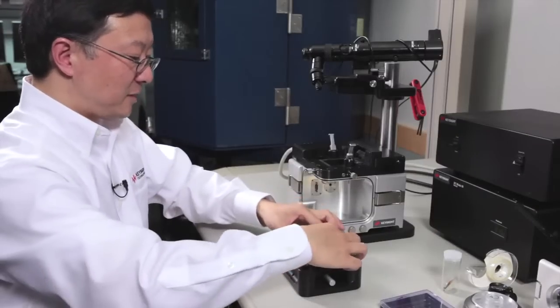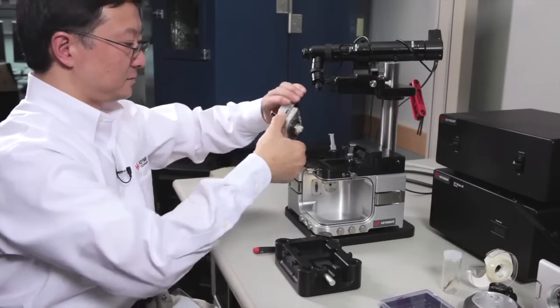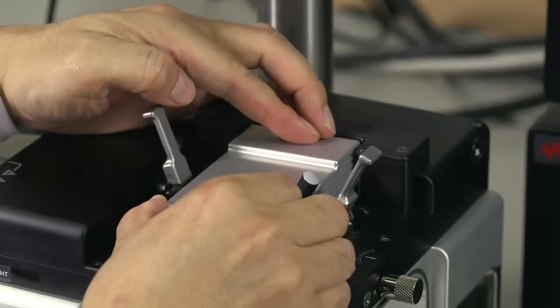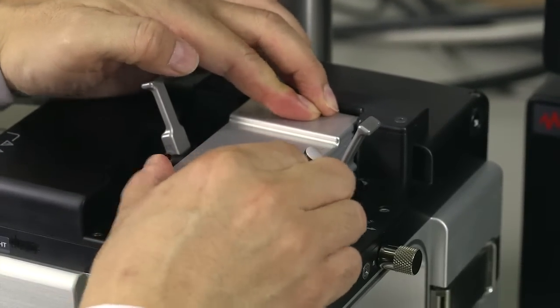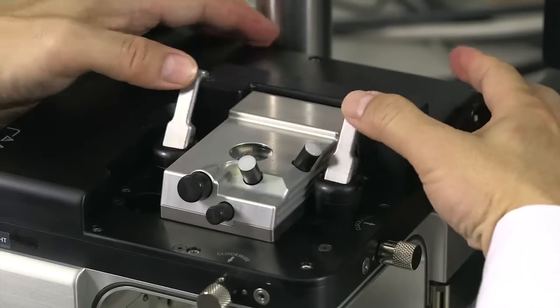Next, we pick up the scanner, insert it into the AFM body, rotate the two levers, and lock down the scanner.